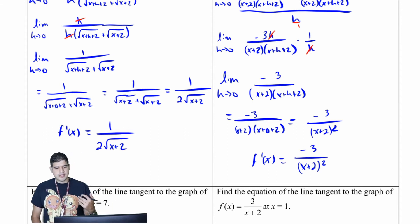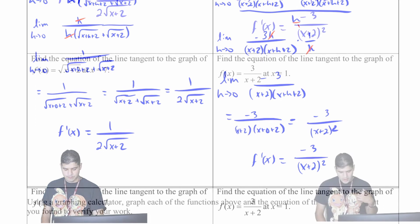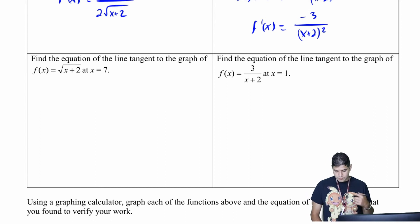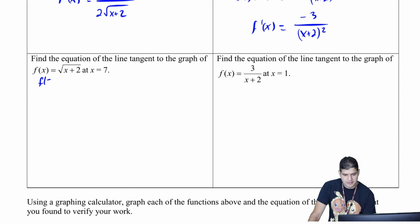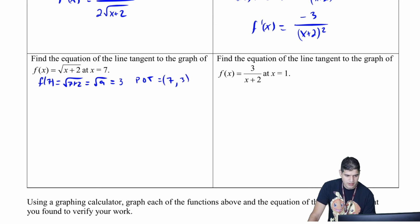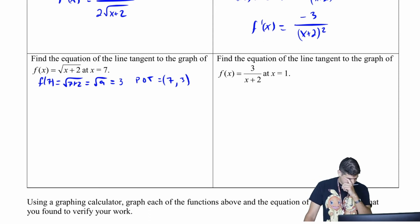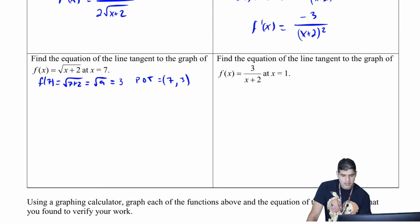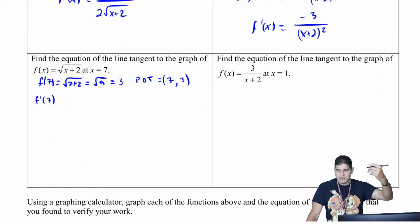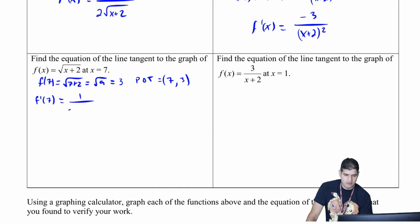Now I'll use the derivatives I found to find the equations of the tangent lines. For the first one, I want the point of tangency at x equals seven. f of seven equals square root of seven plus two, which is square root of nine, so y equals three. My point of tangency is seven comma three. The slope is f prime of seven, which is one over two times square root of seven plus two, giving one over two times three, which is one-sixth.